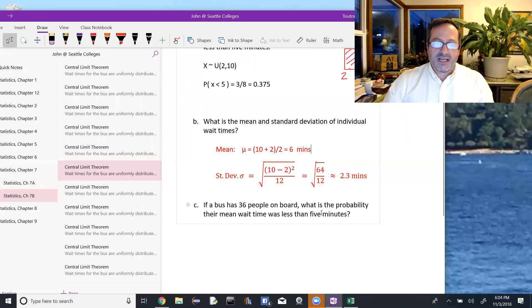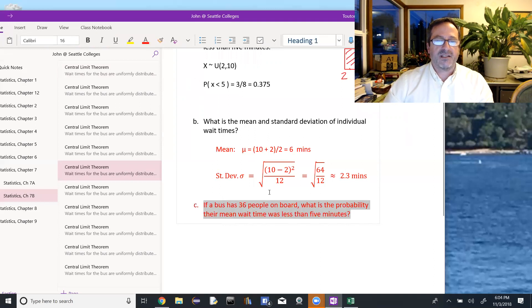For part c, it's asking if a bus has 36 people on board, what is the probability that their mean wait time is less than 5 minutes? So here, we have 36 people. It's no longer an individual.